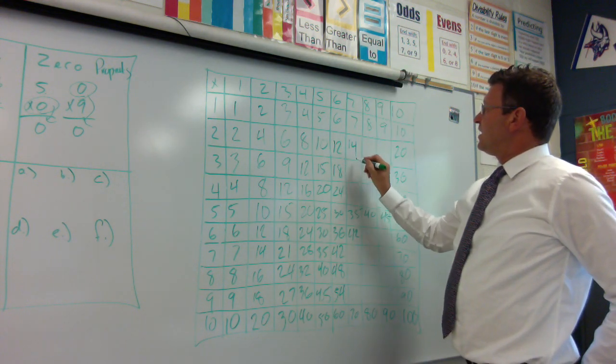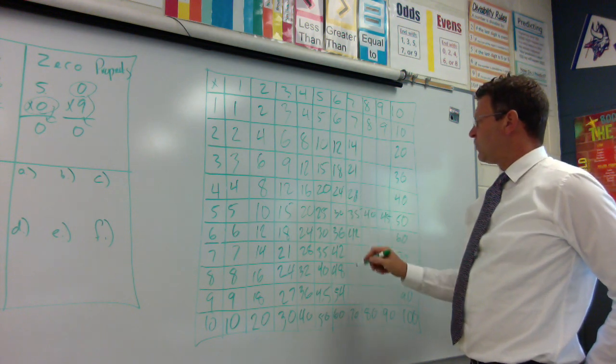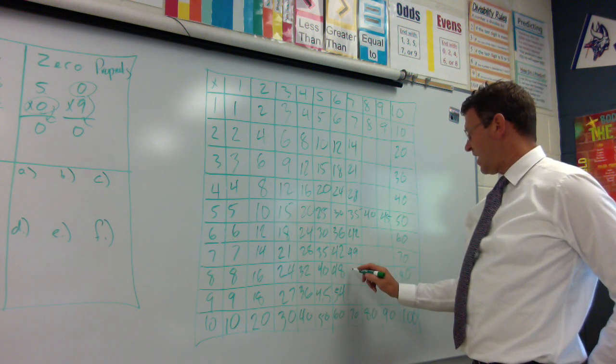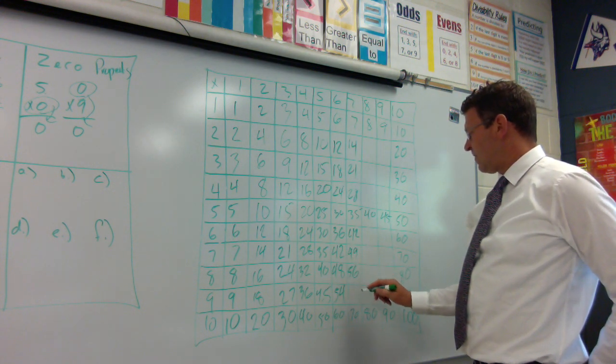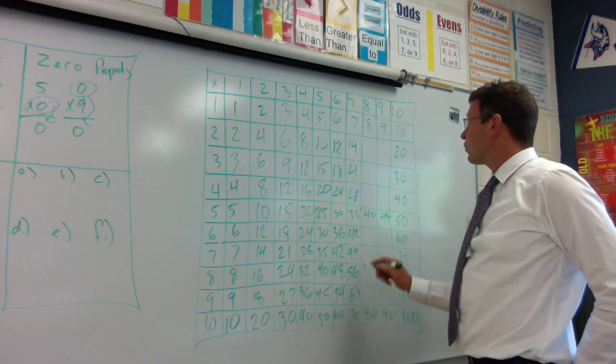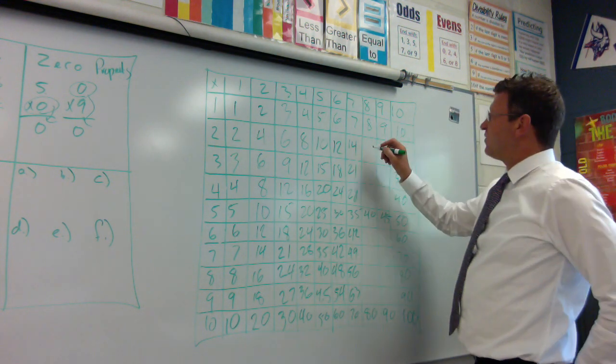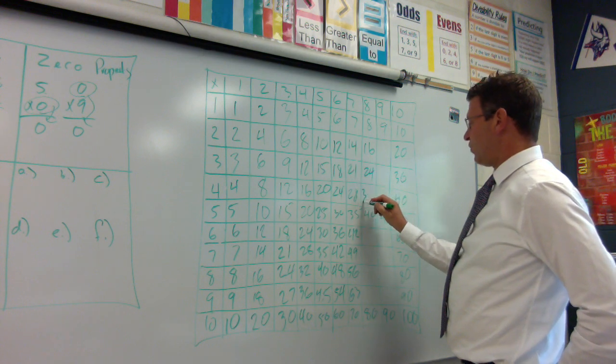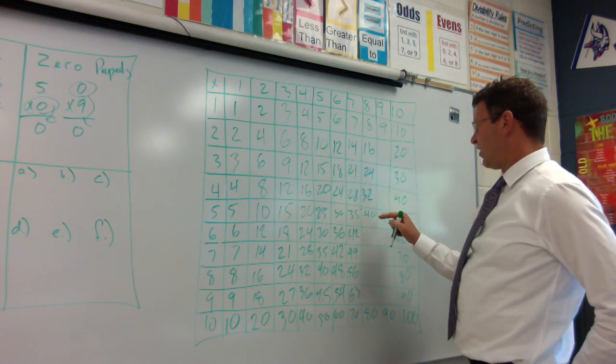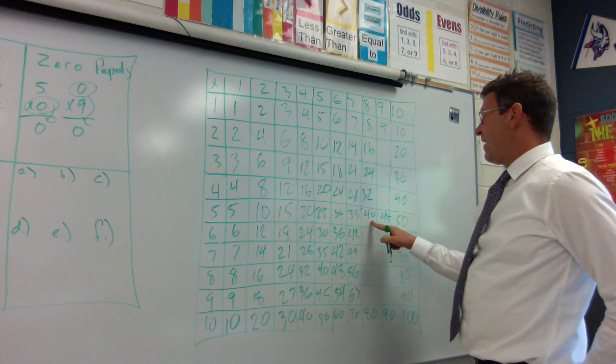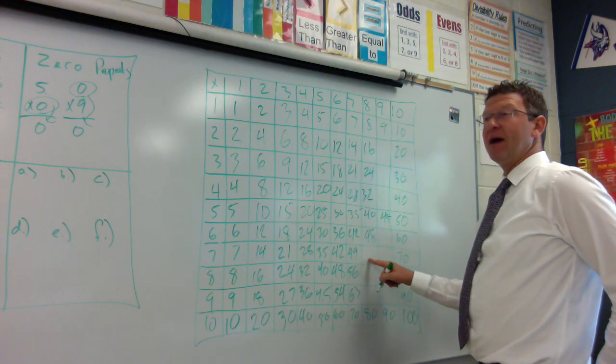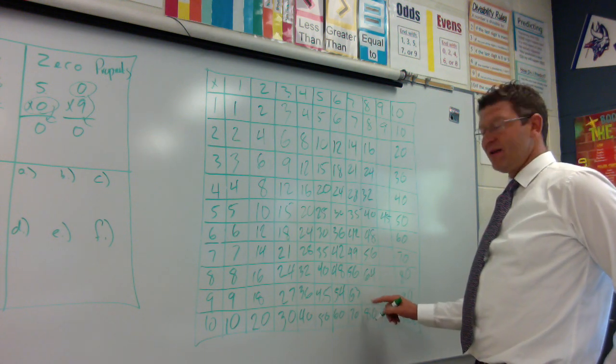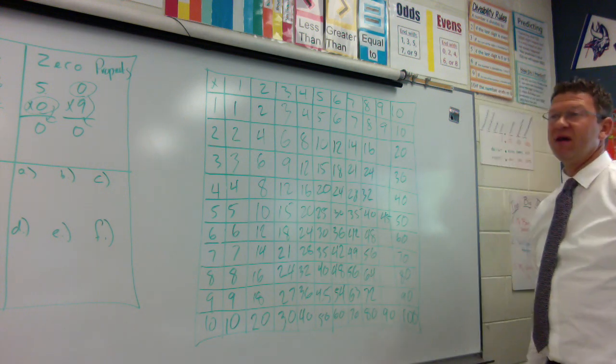Seven times two is fourteen, seven times three is twenty-one, twenty-eight, thirty-five, forty-two. Seven times seven is forty-nine, seven times eight is fifty-six, and seven times nine is sixty-three. Eight. Eight times two is sixteen, eight times three is twenty-four, eight times four is thirty-two, eight times five is forty, eight times six is forty-eight, eight times seven is fifty-six, eight times eight is sixty-four, eight times nine is seventy-two, eight times ten is eighty.